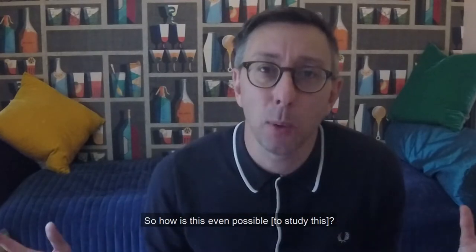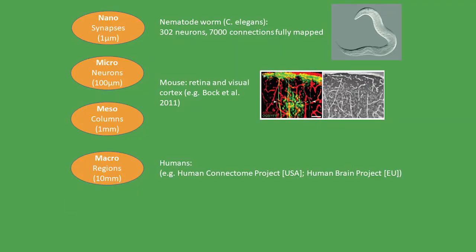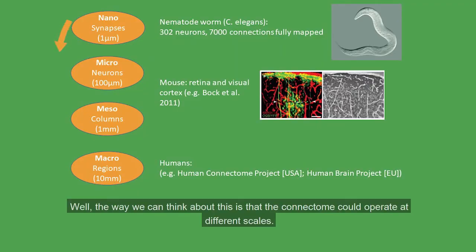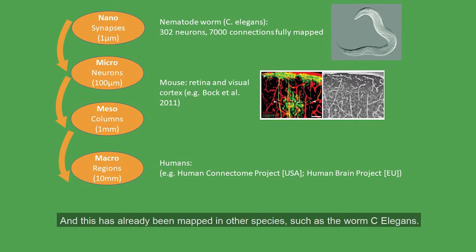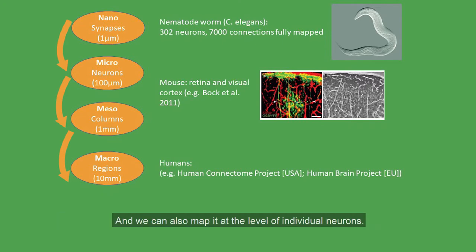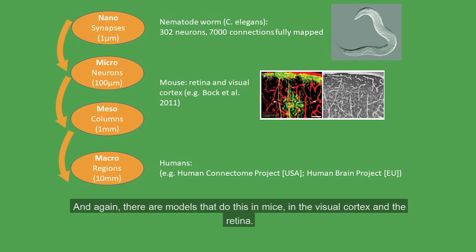So really, how is this even possible? Well, the way we can think about this is that the connectome can operate at different scales. You can measure the connectome at the scale of synapses, and this has already been mapped in other species, such as the worm C. elegans. We can also map it at the level of individual neurons, and there are models that do this in mice, in the visual cortex and the retina.